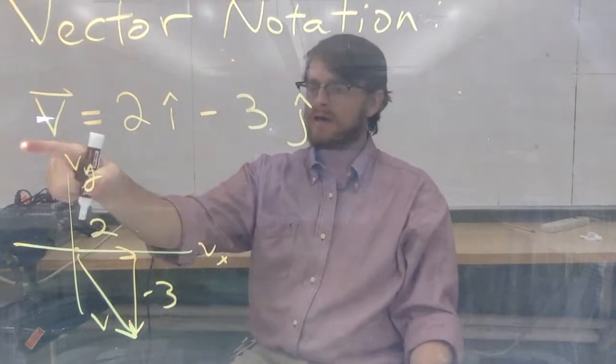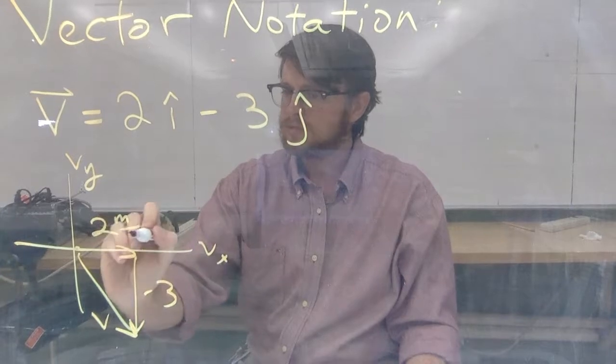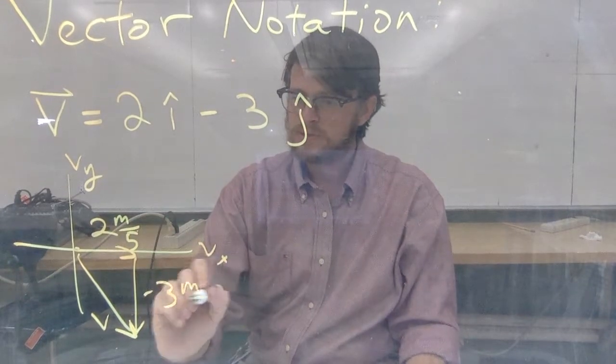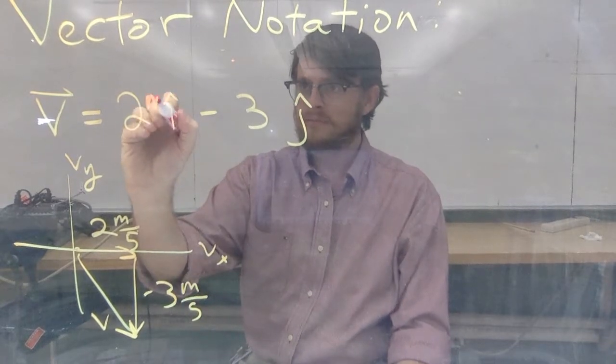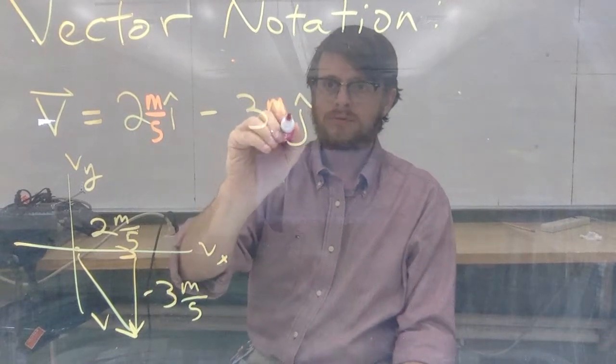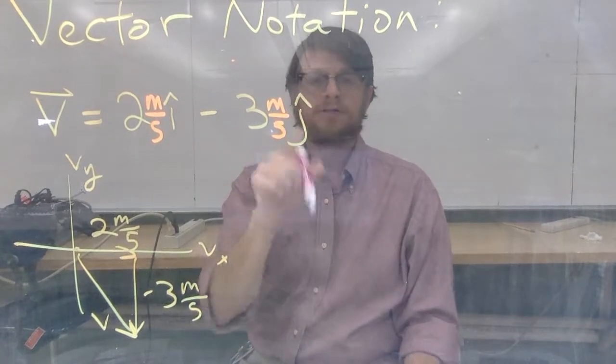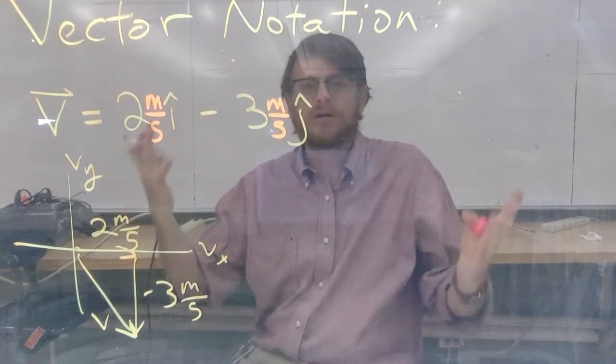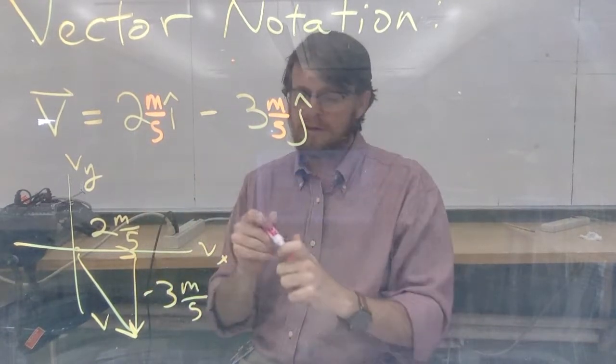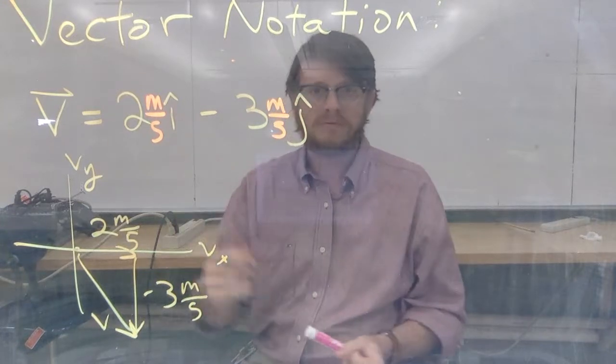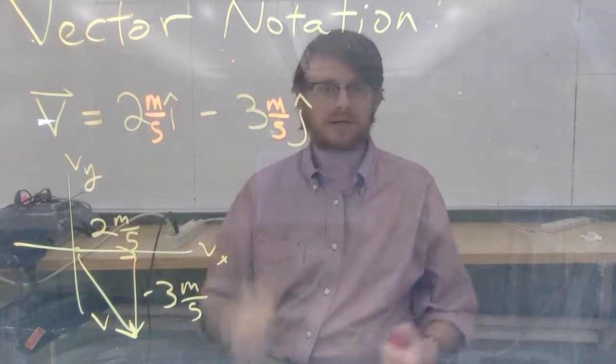So I've written this out in i-hat j-hat notation, but these components are actually 2 meters per second and 3 meters per second. And so the units actually sit in the coefficient here. So they don't live inside the i-hat and the j-hat. The i-hat and j-hat are abstract, basically abstract mathematical indicators. They are length 1 and point in the direction specified. So i goes with x and j goes with y.